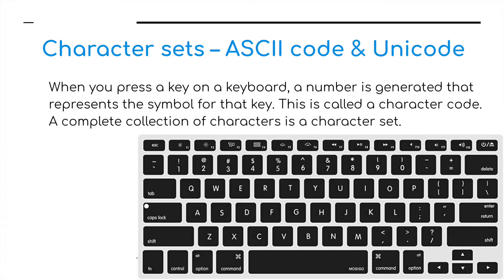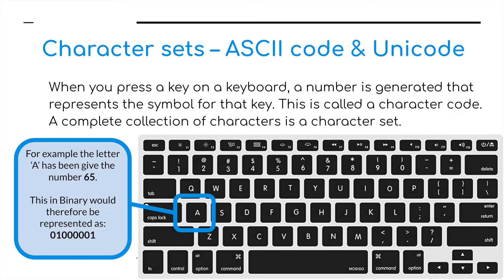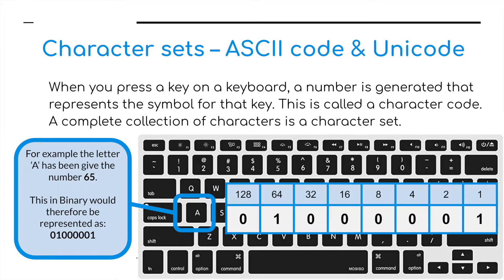A complete collection of characters is what's known as a character set. For example, if we press the capital A on your keyboard, the number 65 is generated. This of course is the denary number and that is converted into binary, which would be 01000001, that is one lot of 64 plus one. So 65.